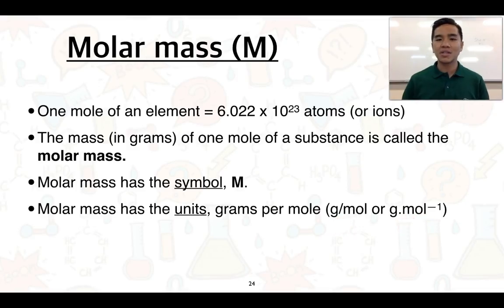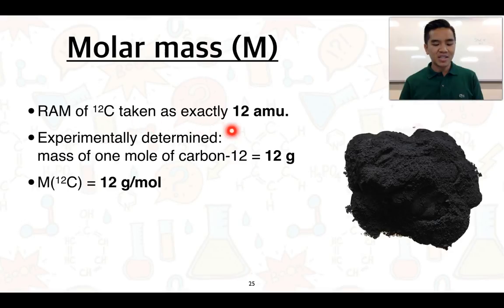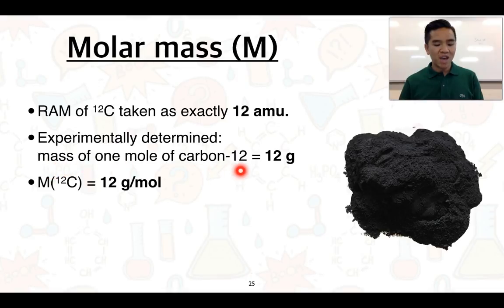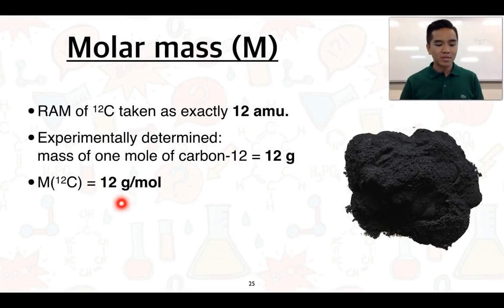Let's use carbon as an example since it is the standard. The relative atomic mass of carbon-12 is taken as exactly 12 amu. Through experimentation, it has been determined that one mole of carbon-12 atoms equals 12 grams. Therefore, the molar mass of carbon-12 is equal to 12 grams per mole, meaning one mole of carbon atoms equals 12 grams.